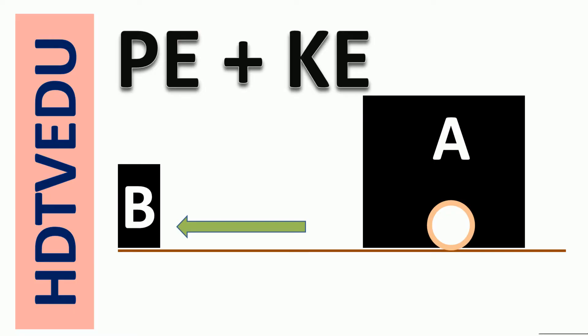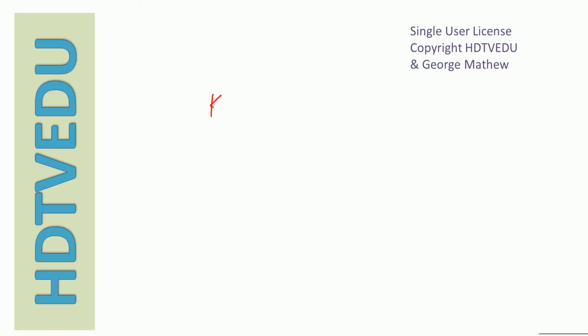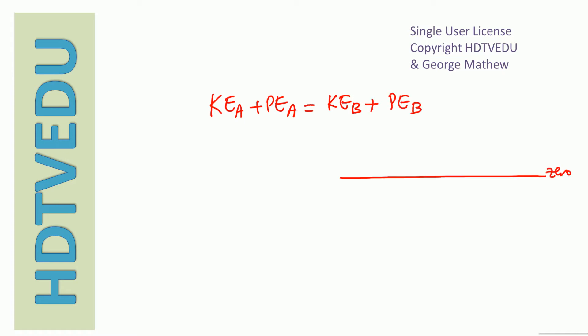In the absence of friction, total mechanical energy is conserved. So we say: kinetic energy at the start plus potential energy at the start equals kinetic energy at B plus potential energy at B.